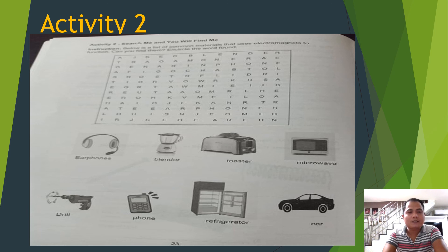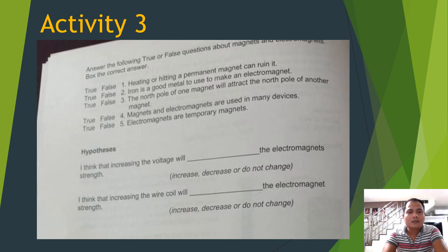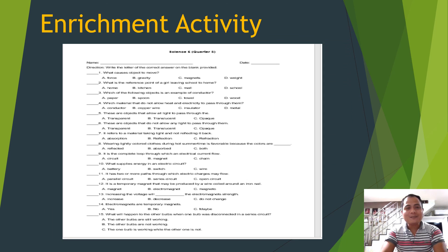With the help and guidance of your parents, do Activity 2 and Activity 3 in your activity sheets. With the help and guidance of your parents and guardians, do the enrichment activity — just write the letters of your answer on the blank provided.